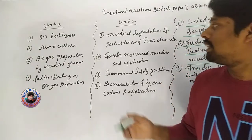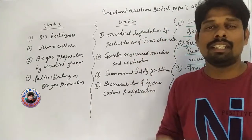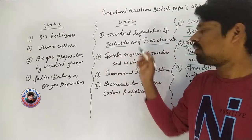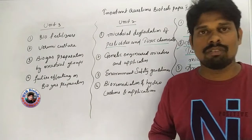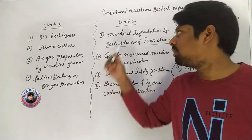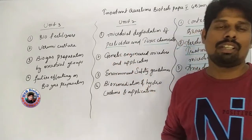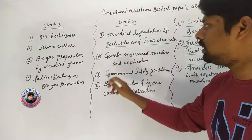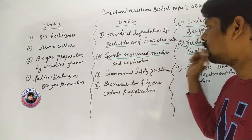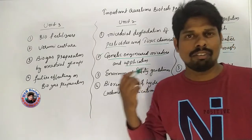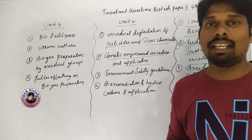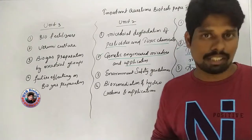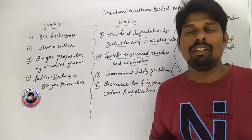The second important question in Unit 2 is genetically engineered microbes. There are different kinds of genetically engineered microbes and there are applications in different fields and also in different production processes.